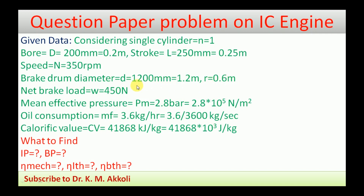The brake drum diameter is used for measuring power. The net brake load on the brake drum W = 450 N. Mean effective pressure PM = 2.8 bar = 2.8 × 10⁵ N/m². Oil (fuel) consumption mass flow rate MF = 3.6 kg/hour = 3.6 / 3600 kg/s.